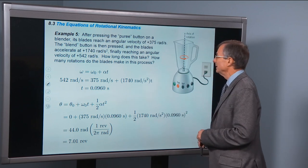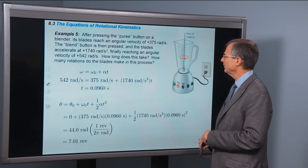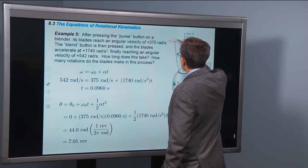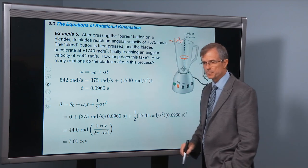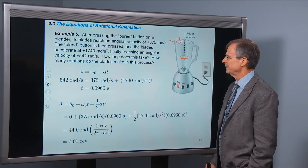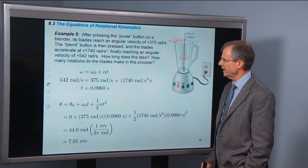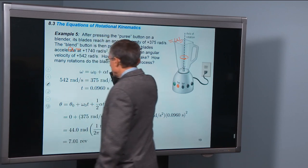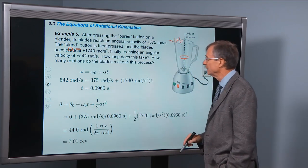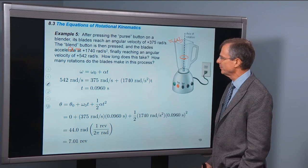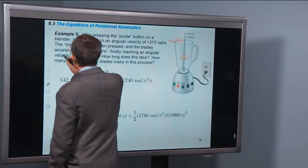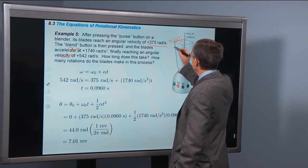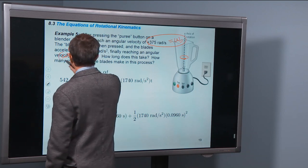After pressing the puree button on a blender, its blades reach an angular velocity of 375 radians per second. This is my initial angular velocity for this problem. The blend button is then pressed and the blades accelerate at 1740 radians per second squared, finally reaching an angular velocity of 542 radians per second. That's the final angular velocity.